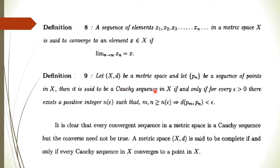What do you mean by a Cauchy sequence? Let (X, D) be a metric space and Pₙ any sequence of points in X. Then Pₙ is said to be Cauchy if and only if for every ε > 0 there exists a positive integer N(ε) such that for every m, n ≥ N, the distance between Pₘ and Pₙ is less than ε. This means that after leaving some finite number of terms, the distance between every two points is less than ε. It is clear that every convergent sequence is Cauchy.